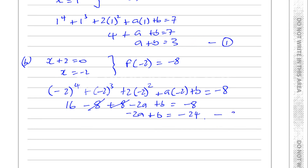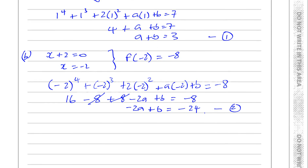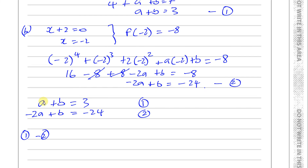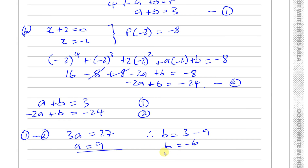We now have two equations: equation 1 is a plus b equals 3, and equation 2 is minus 2a plus b equals minus 24. Using elimination — subtracting equation 2 from equation 1 — the b's disappear. We get a minus minus 2a, which is 3a, equals 3 minus minus 24, which is 27. So a equals 27 divided by 3, which is 9. Therefore b equals 3 minus 9, so b is negative 6.